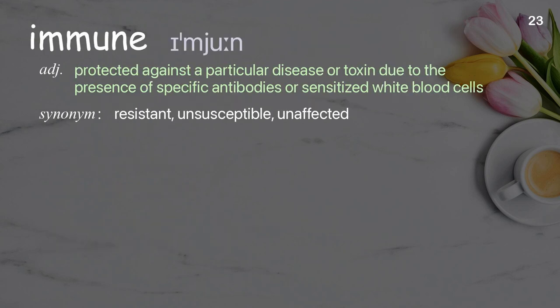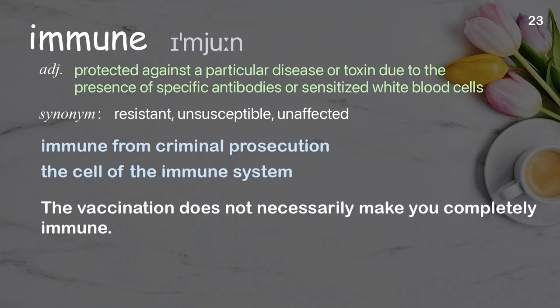Immune: Protected against a particular disease or toxin due to the presence of specific antibodies or sensitized white blood cells. Examples: Immune from criminal prosecution. The cell of the immune system. The vaccination does not necessarily make you completely immune.